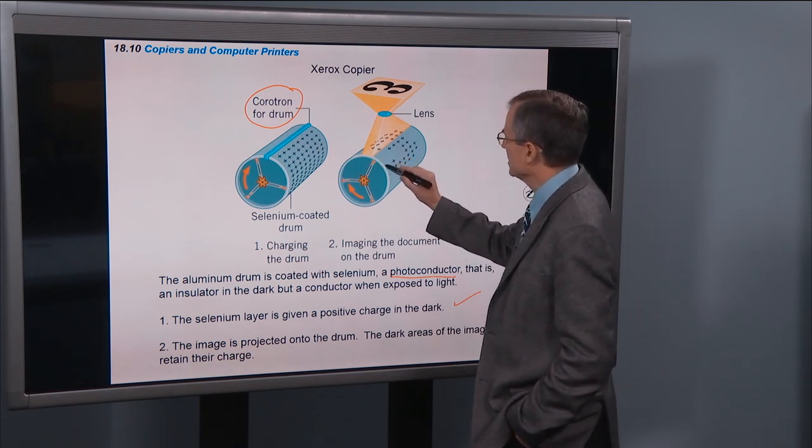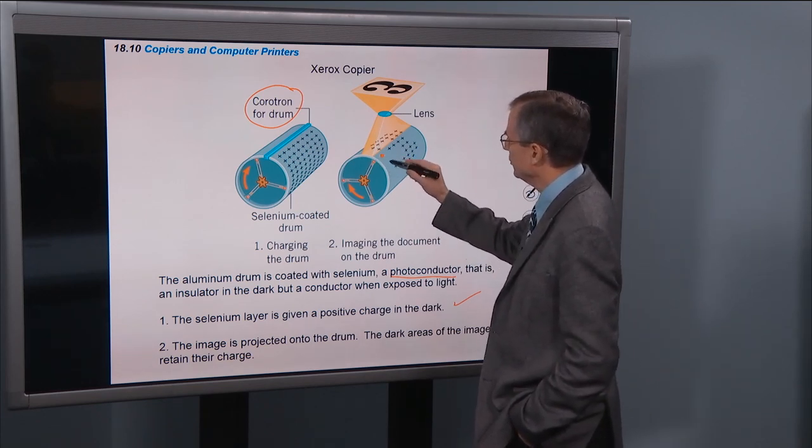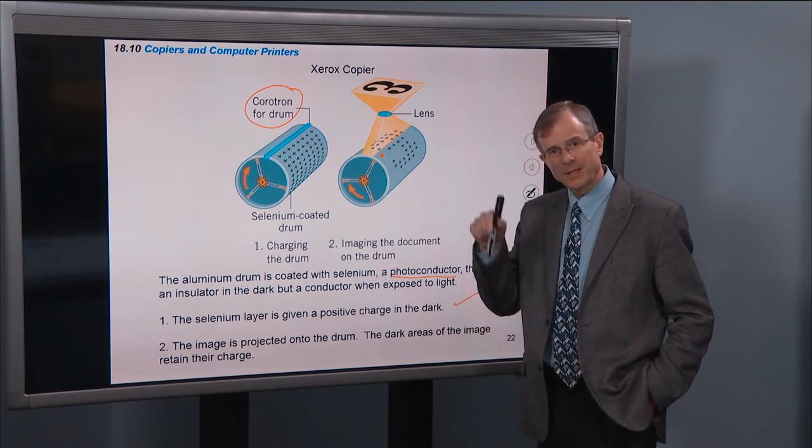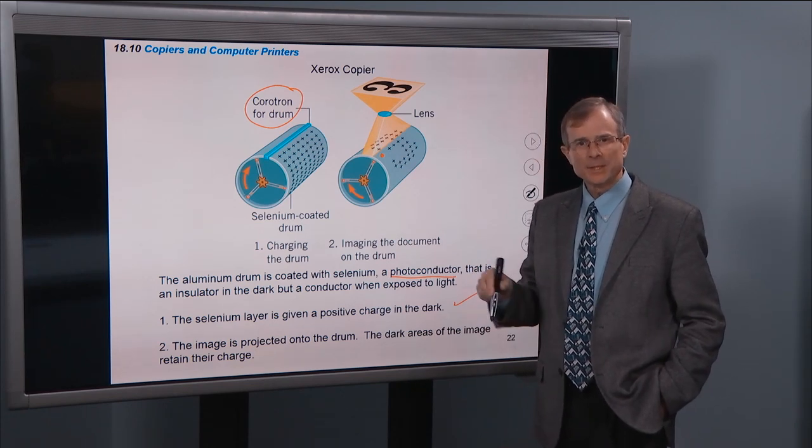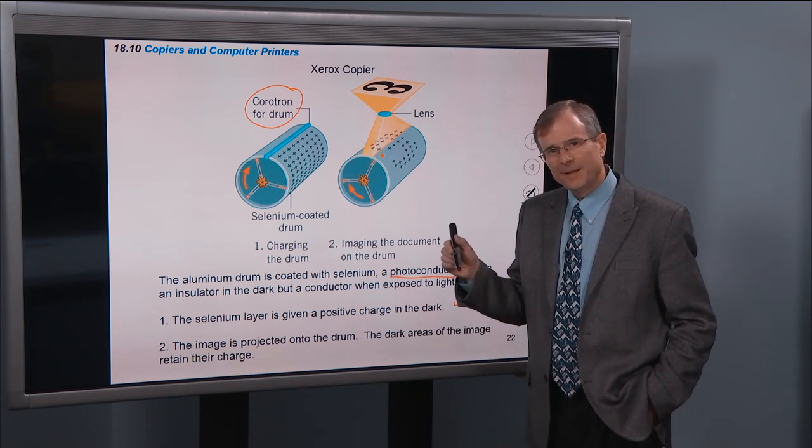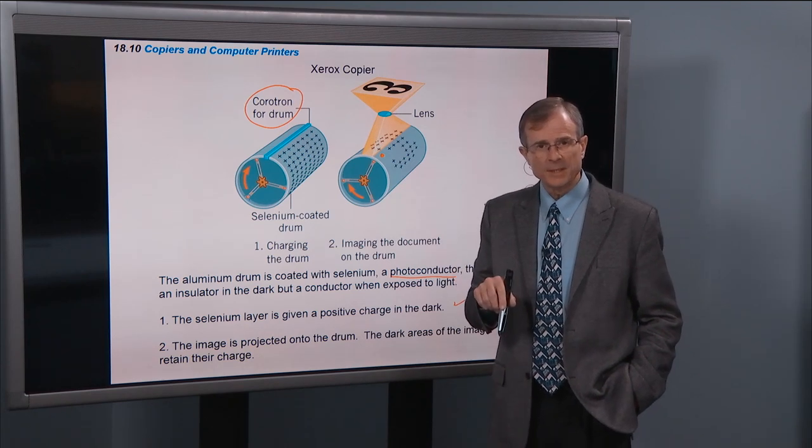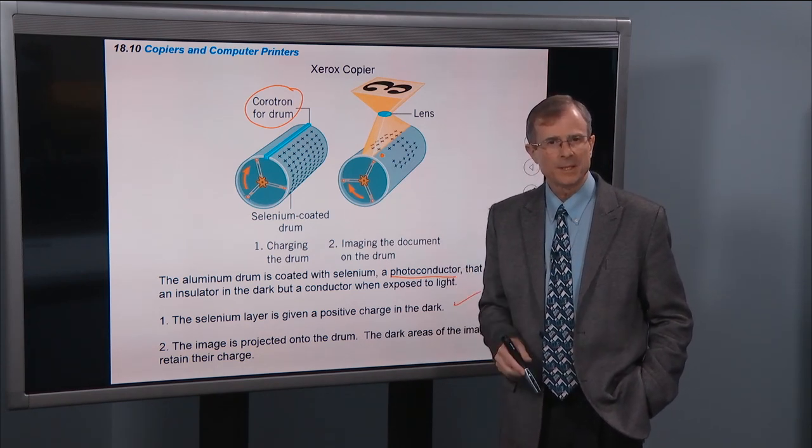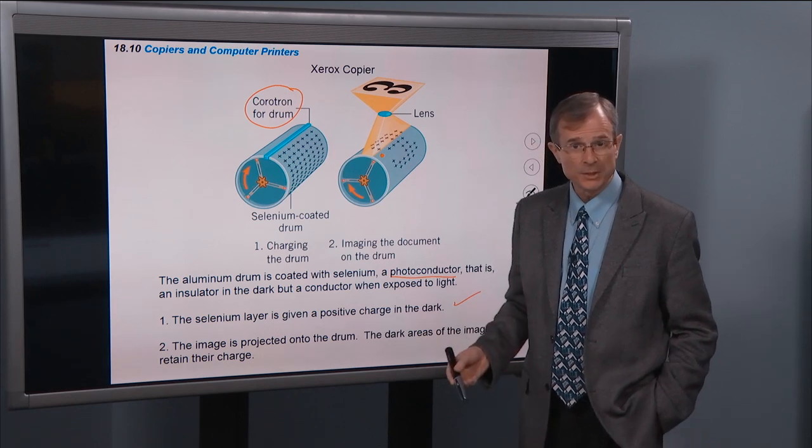Well, where the light hits, so the spaces where there isn't a three, like the space like that, the light's going to hit that spot. The selenium is going to become a conductor. And then that charge that you put on the selenium gets conducted through the aluminum. And the selenium is left as electrically neutral.